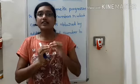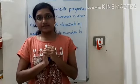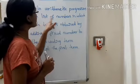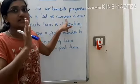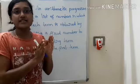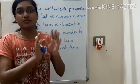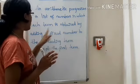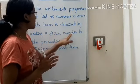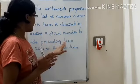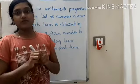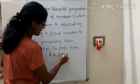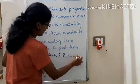An arithmetic progression is a list of numbers in which each term is obtained by adding a fixed number to the preceding term, except the first term. For example: 2, 4, 6, 8, 10, and so on.